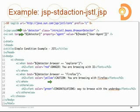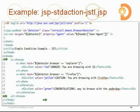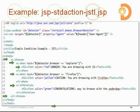Now that we have included the tag library, created our bean, and initialized it with an appropriate value for the agent property, we can go ahead and access the bean using JSTL. We looked at an example of conditional output using the choose semantic. Within this choose, we define three different test cases: if the value of the browser property equals 'explorer' we generate conditional text, if it equals 'Firefox' we generate a different block, and otherwise we generate the default block.